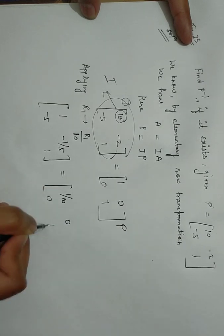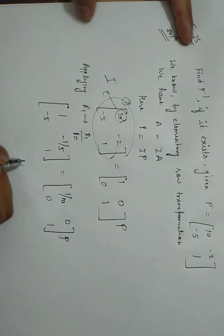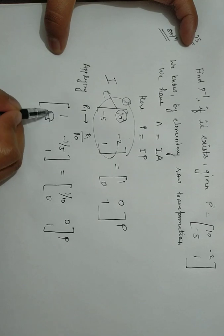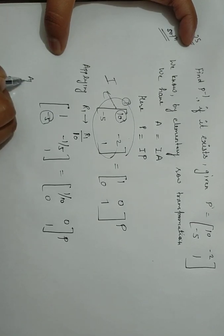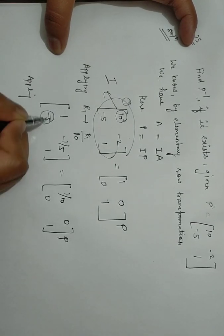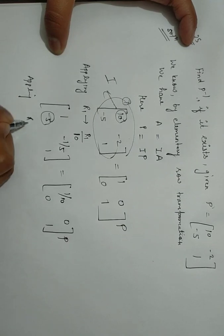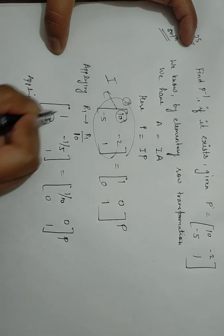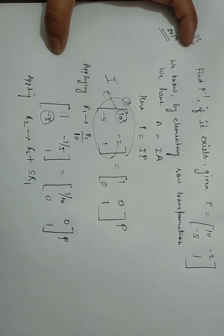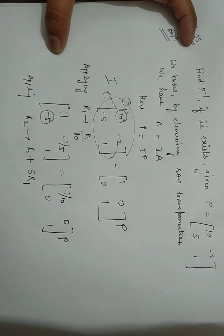Now next step to make it zero. So applying minus 5 plus 5 will give me zero. So R2 operation: R2 plus 5 times R1.